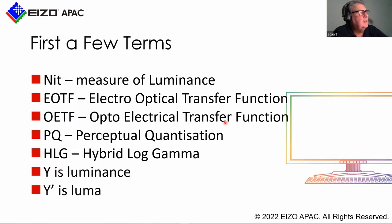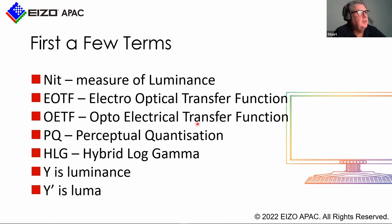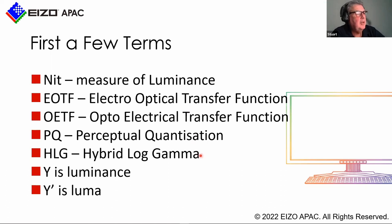Let's go through some basic terms. A NIT is a measure of luminance — basically how bright something is. An EOTF is the electro-optical transfer function coming from your Resolve system into the display. The opto-electrical is the camera function capturing the image and creating an electrical signal. Perceptual quantization is one of the two HDR formats — the ST-2084, the Dolby Vision HDR10 style of HDR. Hybrid Log Gamma was developed by NHK and BBC and is really used for broadcasting live HDR work.